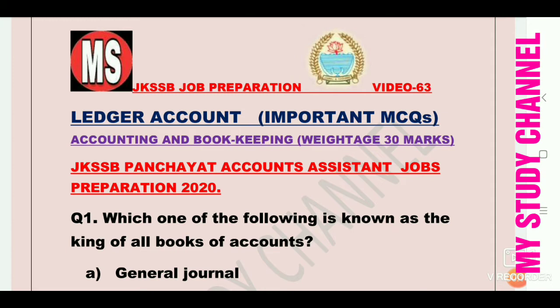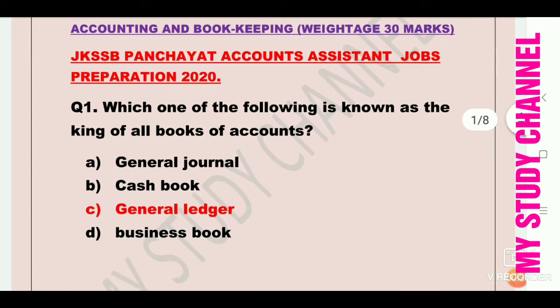Question number 1: Which one of the following is known as the king of all books of accounts? Option A is general journal, B is cash book, C is general ledger, and D is business book. Here option C is the right answer, that is general ledger. General ledger is known as the king of all books of accounts.